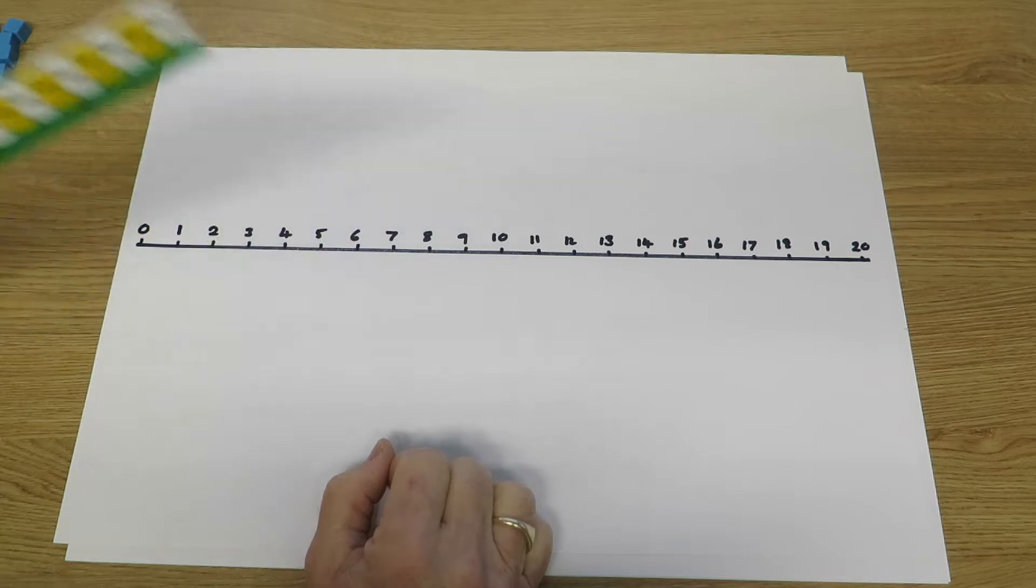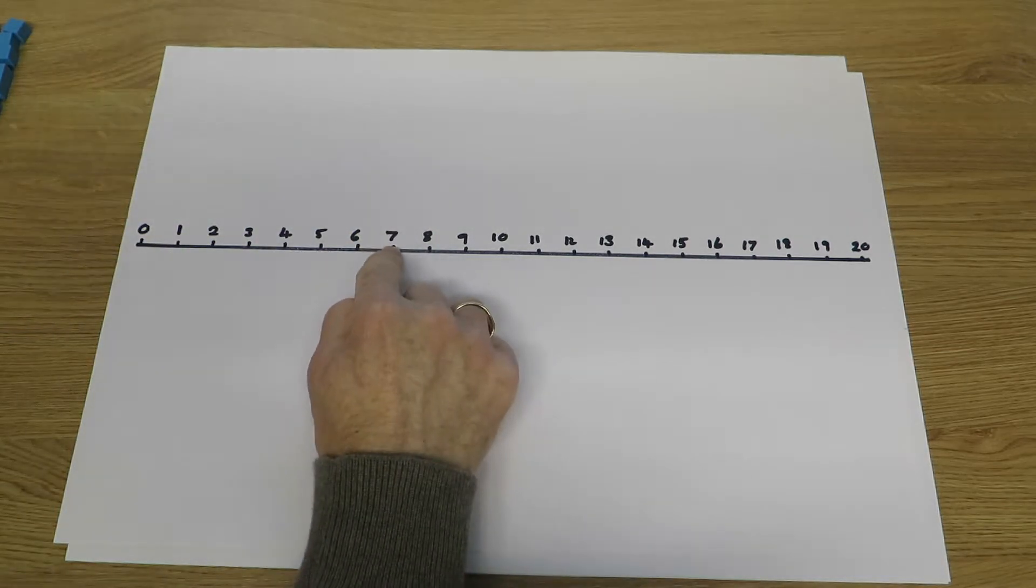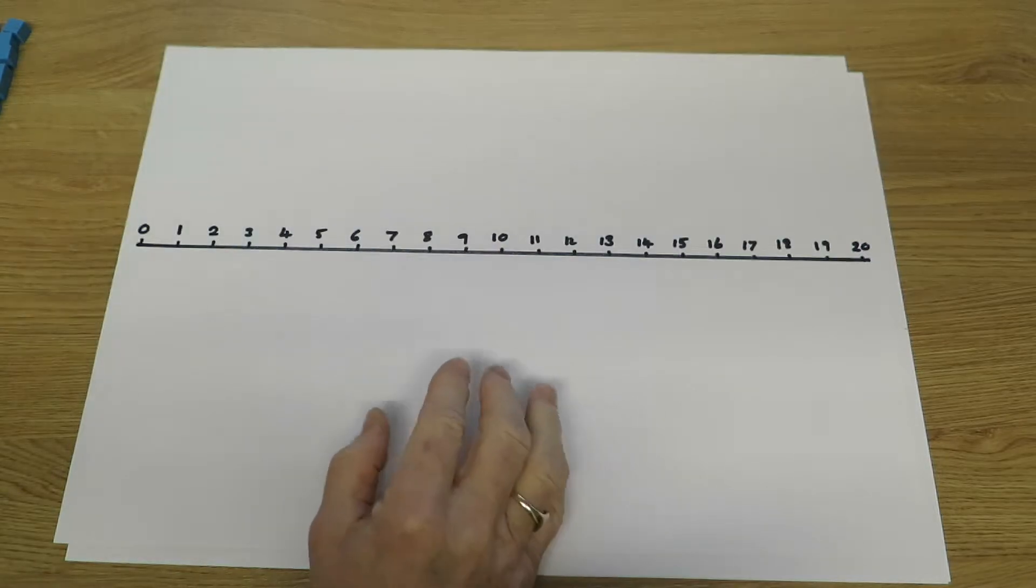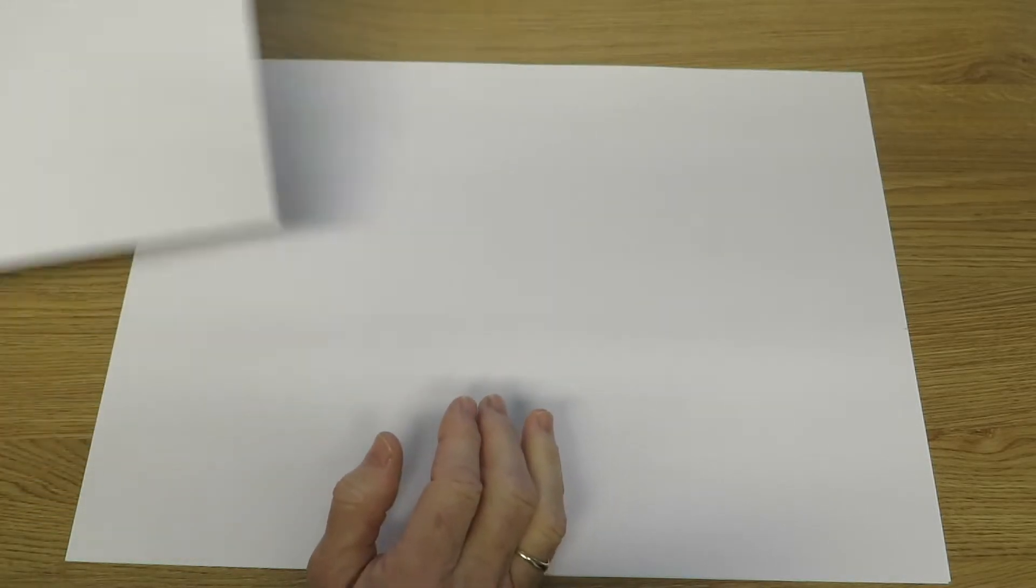And they'll begin to use their knowledge of number facts such as 7 add 5 equals 12 to find related facts.